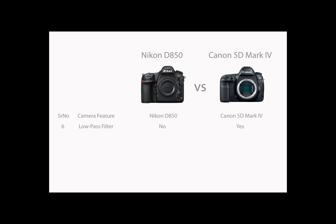Nikon D850 does not have a low-pass filter, whereas Canon 5D Mark IV has a low-pass filter. Without a low-pass filter, the Nikon D850 shoots very sharp and detailed images, making it an ideal choice for landscape, fashion, architectural, and wildlife photography.